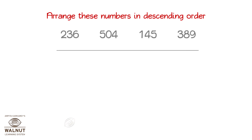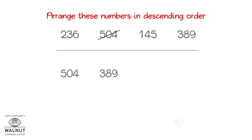Arrange these numbers in descending order. You pick the biggest number and place it first. Then the next biggest and then the next one. Then place the last one. So, we get the numbers in descending order.